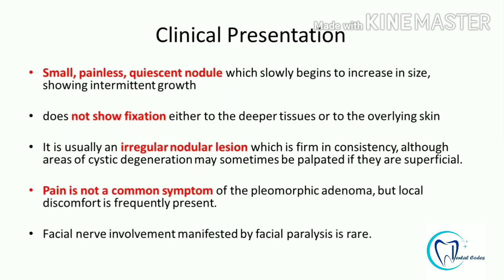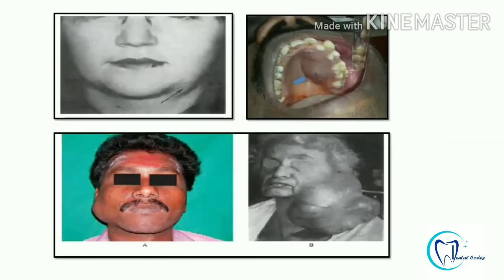Talking about its clinical presentation, it is a small painless quiescent nodule which grows gradually in size and the growth is intermittent. Because this tumour is benign, it will grow slowly and intermittently. However, anything which is malignant will show rapid enlargement and continuous growth. This pleomorphic adenoma grows slowly and shows an intermittent growth pattern. It does not show any fixation to the underlying structures and is usually an irregular nodular lesion. Pain is not a common symptom, but sometimes when the size increases there may be some local discomfort. Clinically, it is usually associated with the parotid gland and in the intraoral side, the most common location is the palate.